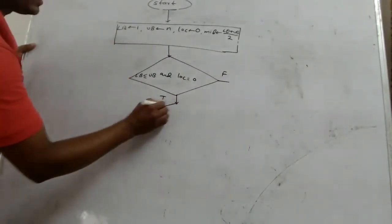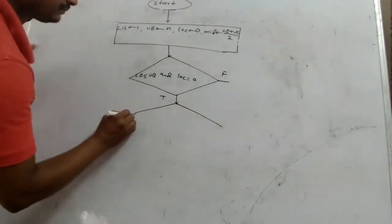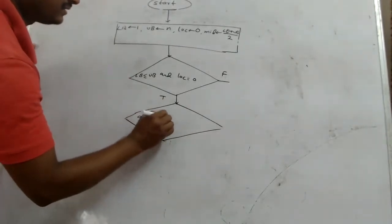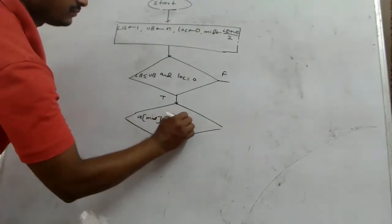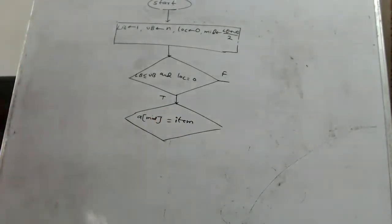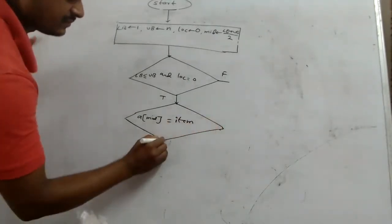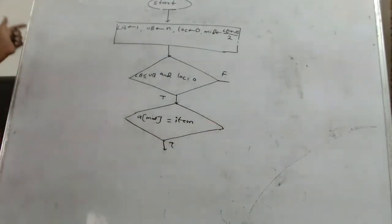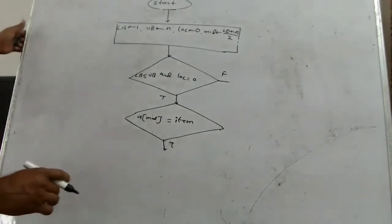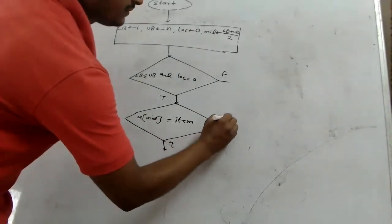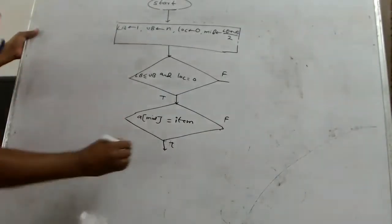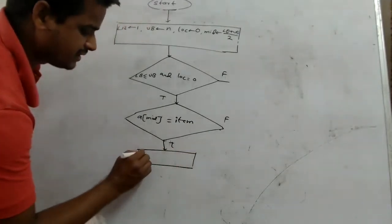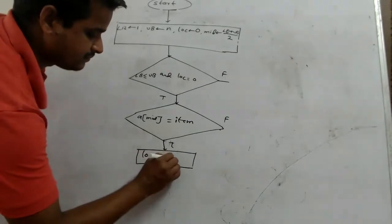Condition true होने पर फिर से if condition है: if array of mid equals to item. यहाँ पर फिर से true case और false case है। जब condition true होगा, तो उस case में LOC को mid assign करेंगे।